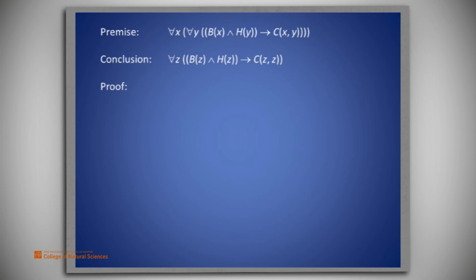We begin the proof by listing the single premise on line 1, that is, for all X and for all Y, if B of X and H of Y, then C of X and Y. Now we first instantiate the X to A, a symbol for an arbitrary element. We obtain on line 2 for all Y, B of A and H of Y implies C of A and Y.